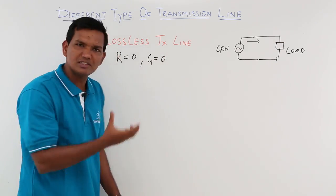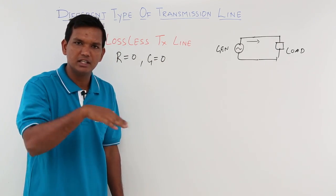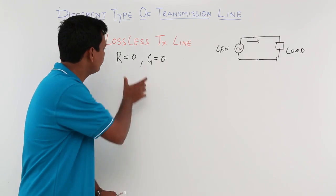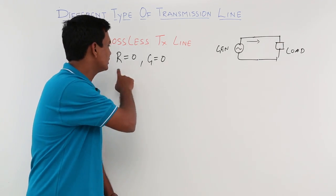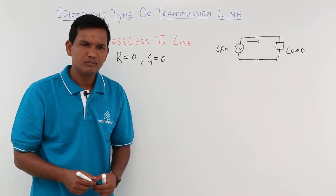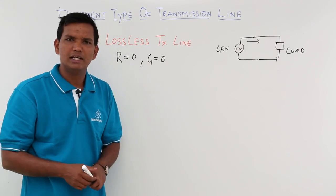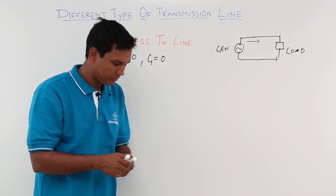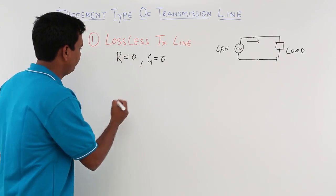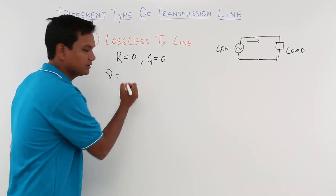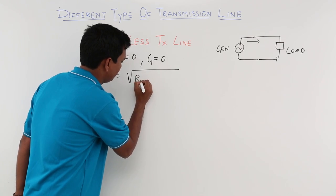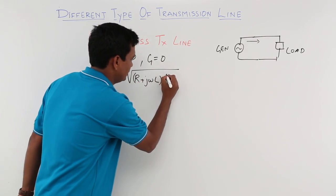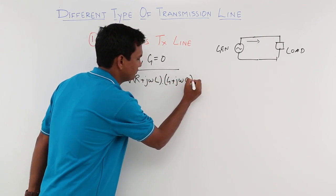The resistor is the element where loss actually happens — if voltage flows across a resistor there will be a drop, which is the loss. So if you want zero loss, R and G must be zero. Now let us see what the propagation constant and characteristic impedance would be in this case. We know gamma is equal to the square root of (R + jωL)(G + jωC).